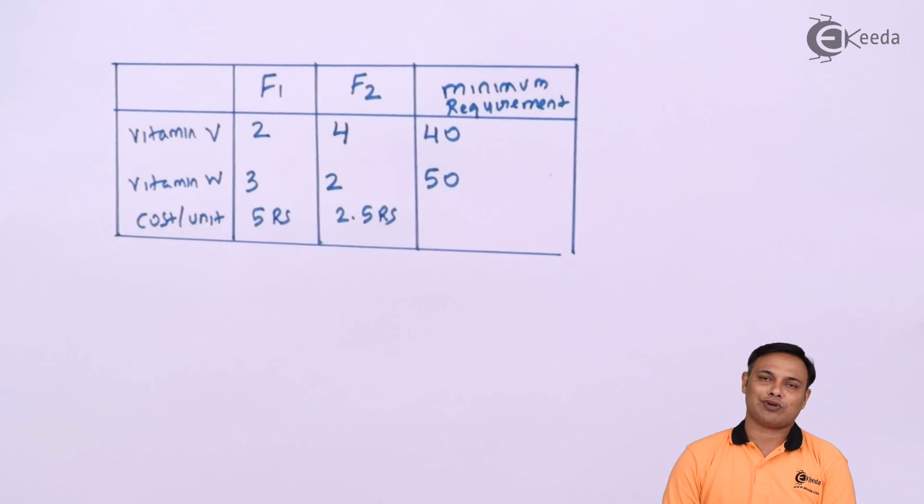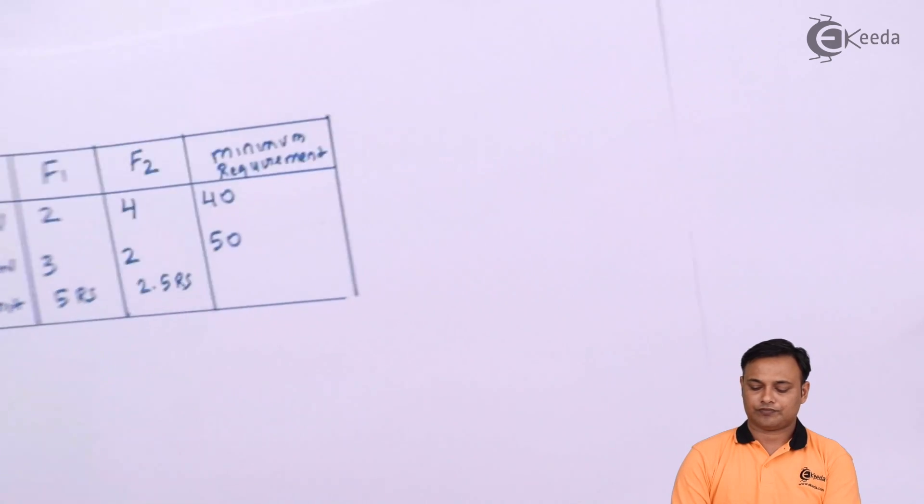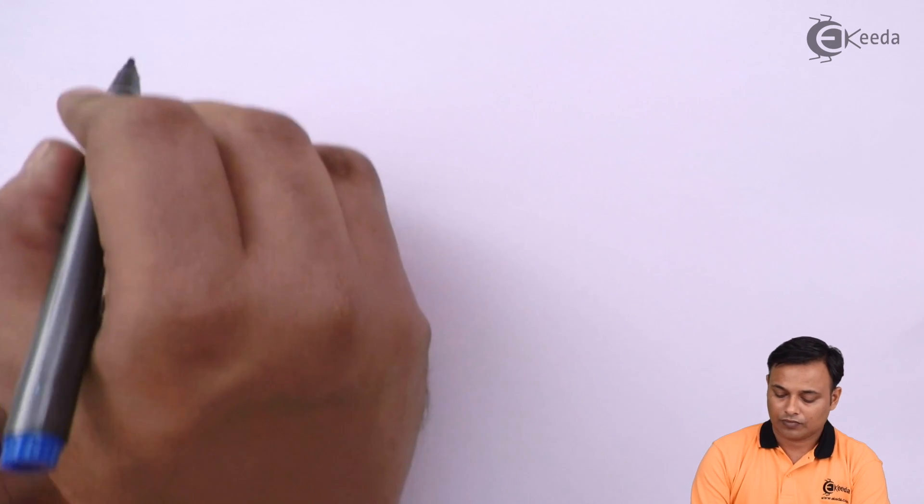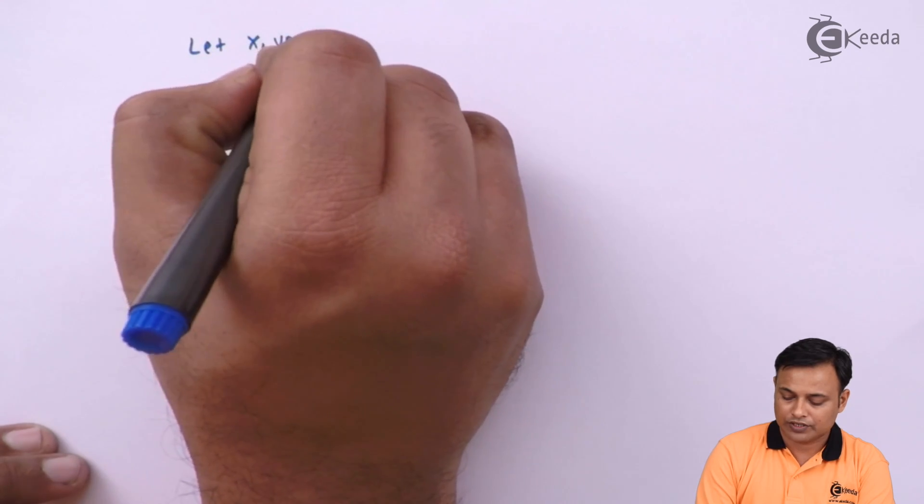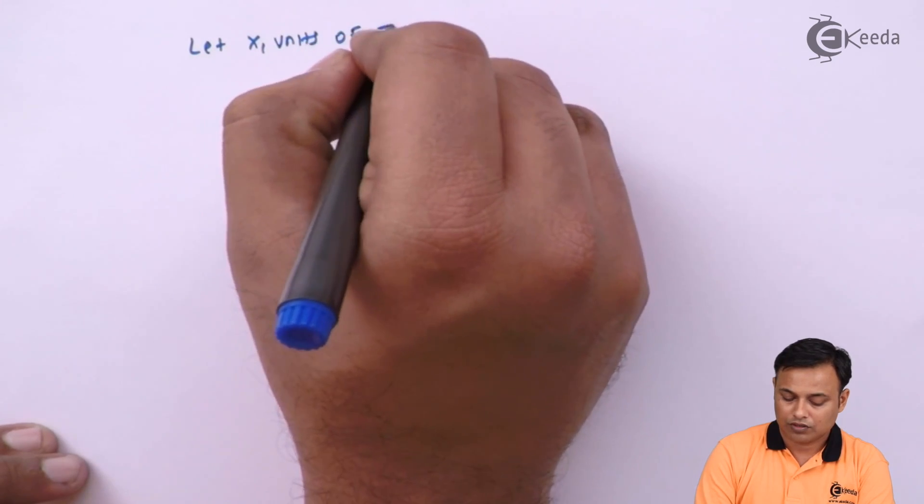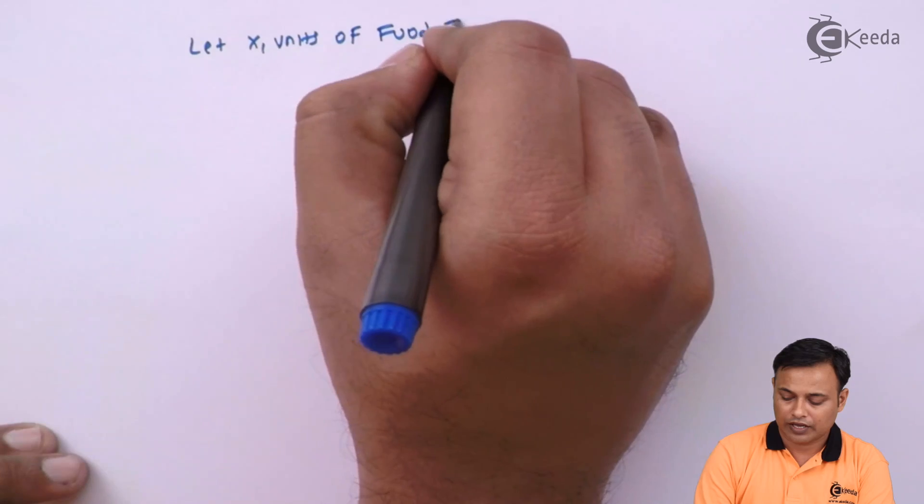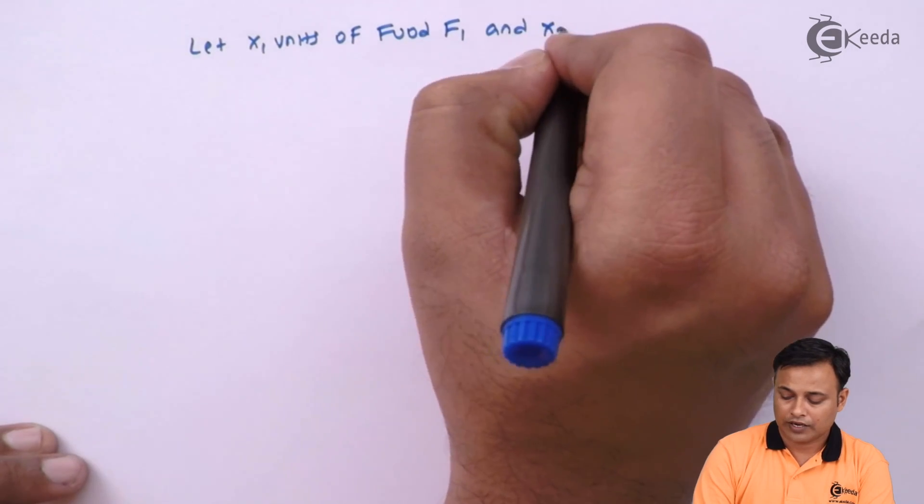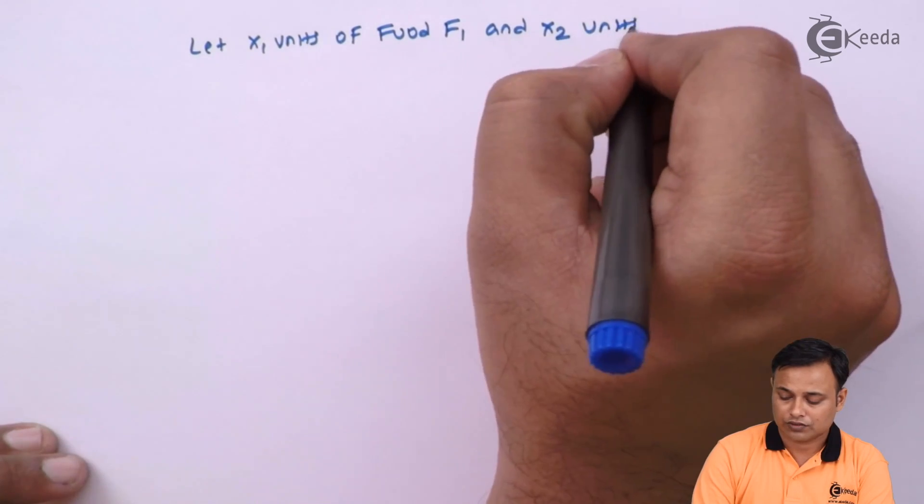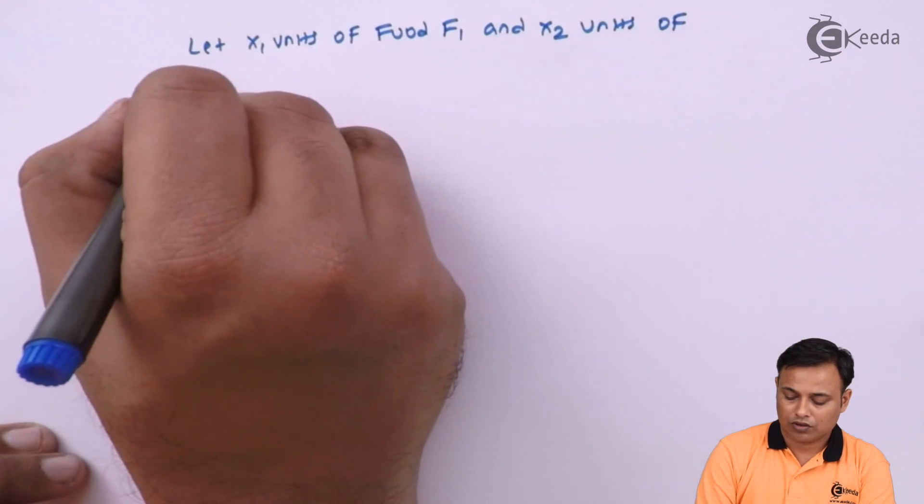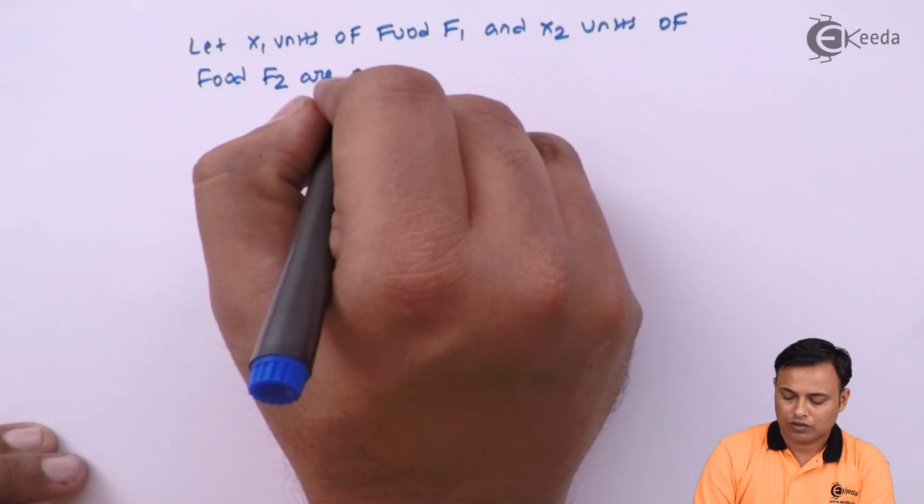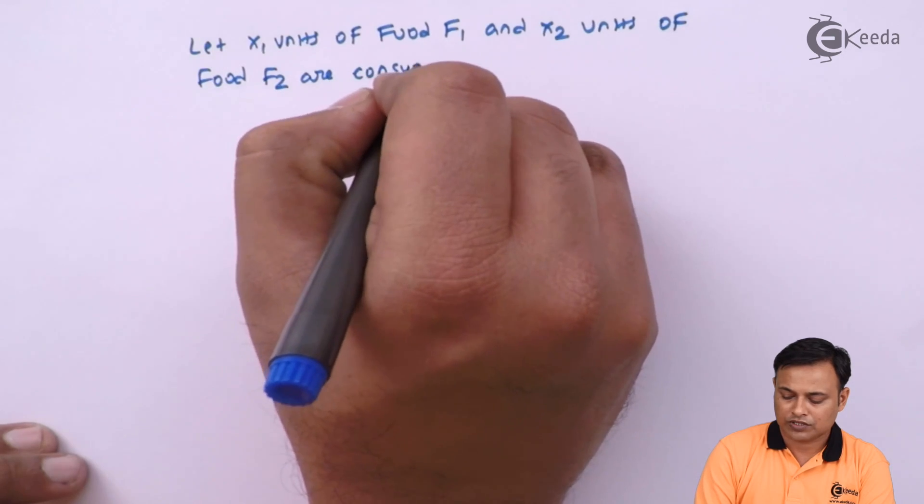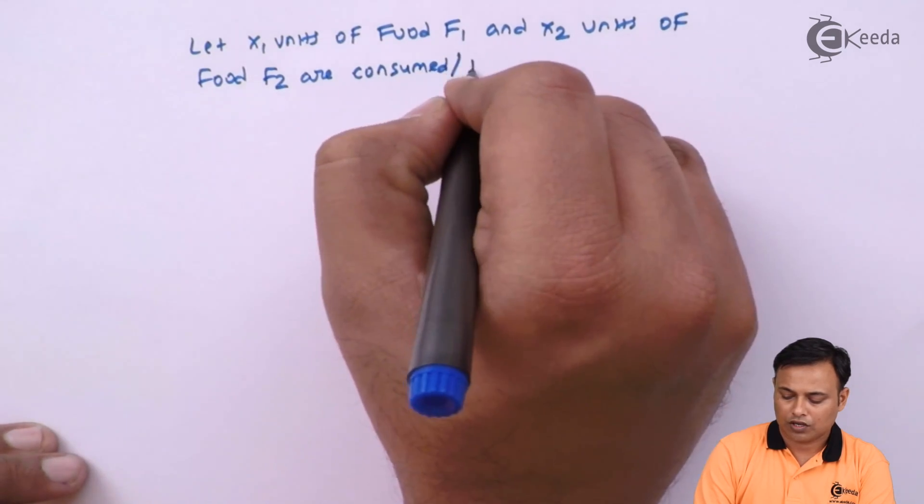Now, we are supposed to solve it out. First, as usual we write down our assumption. Let x1 units of food F1 and x2 units of food F2 are purchased or consumed.